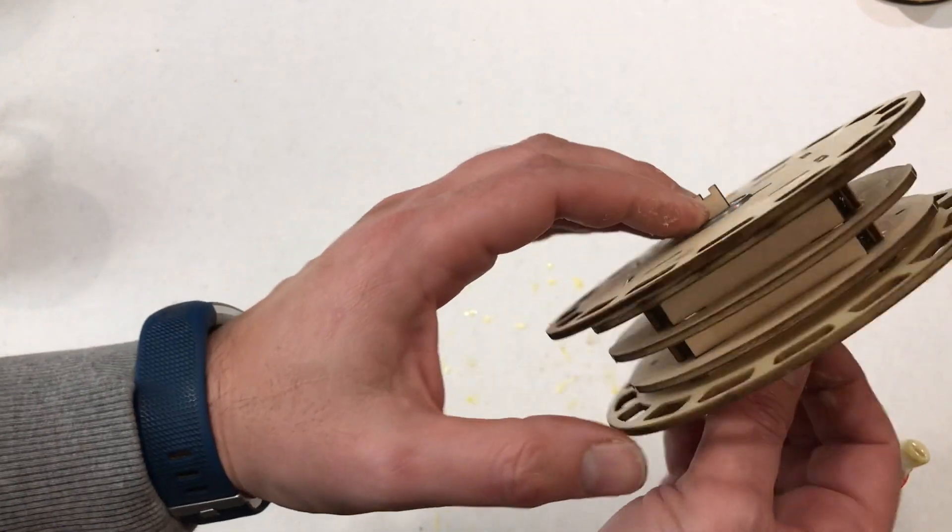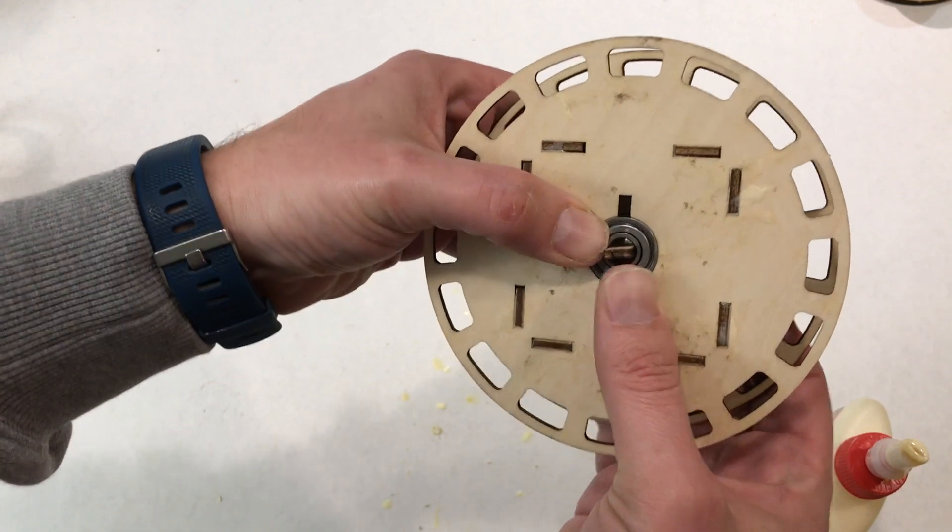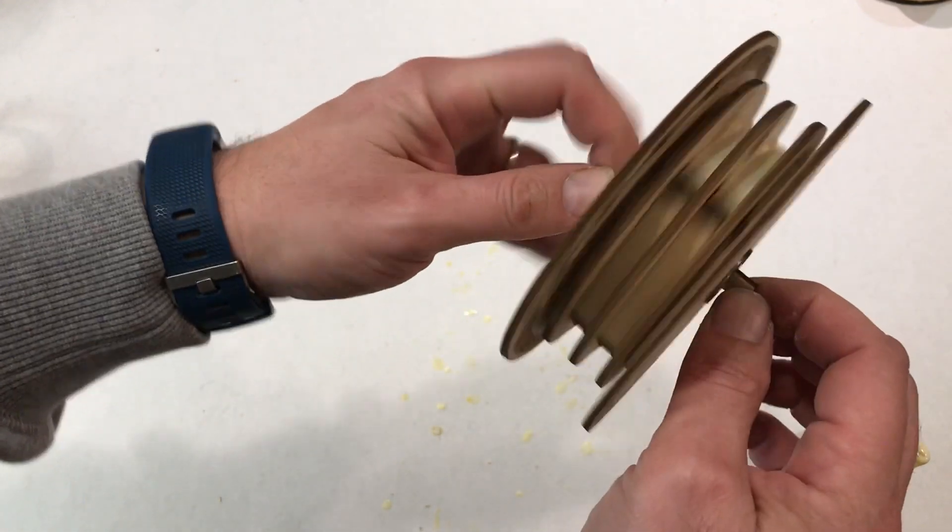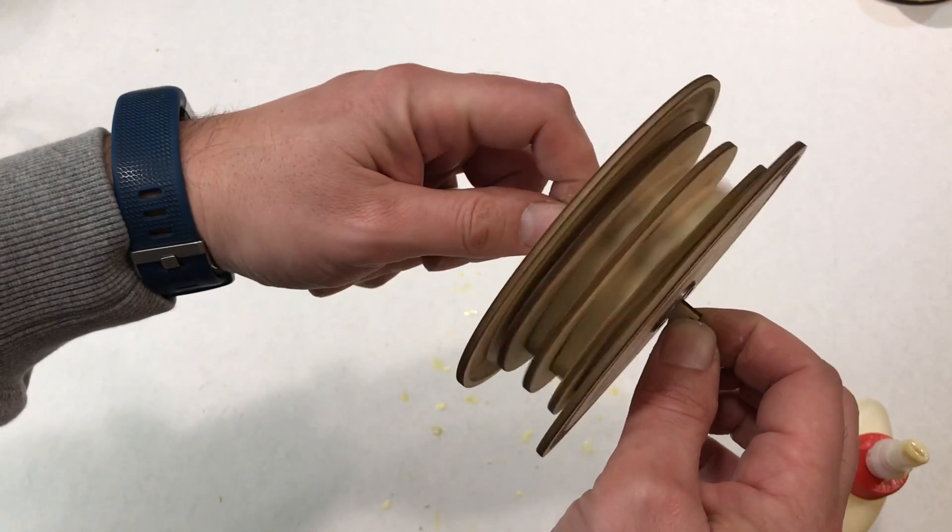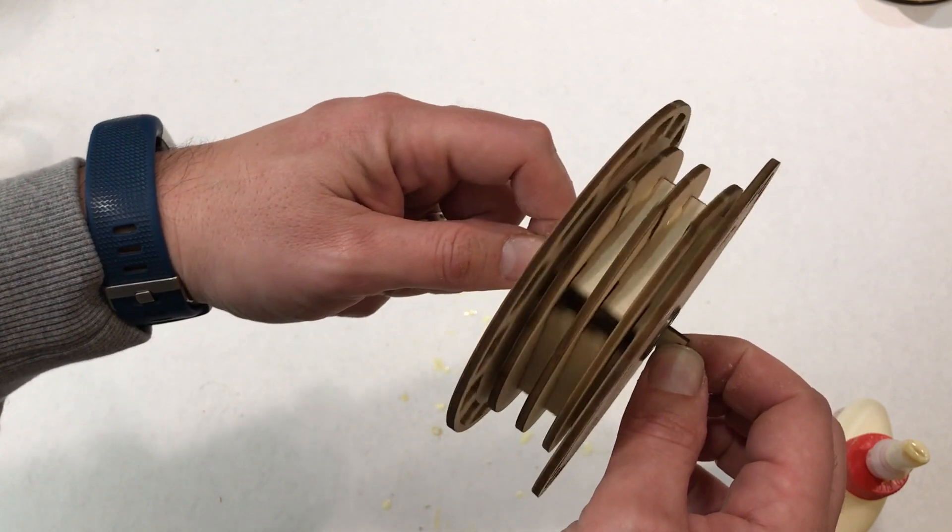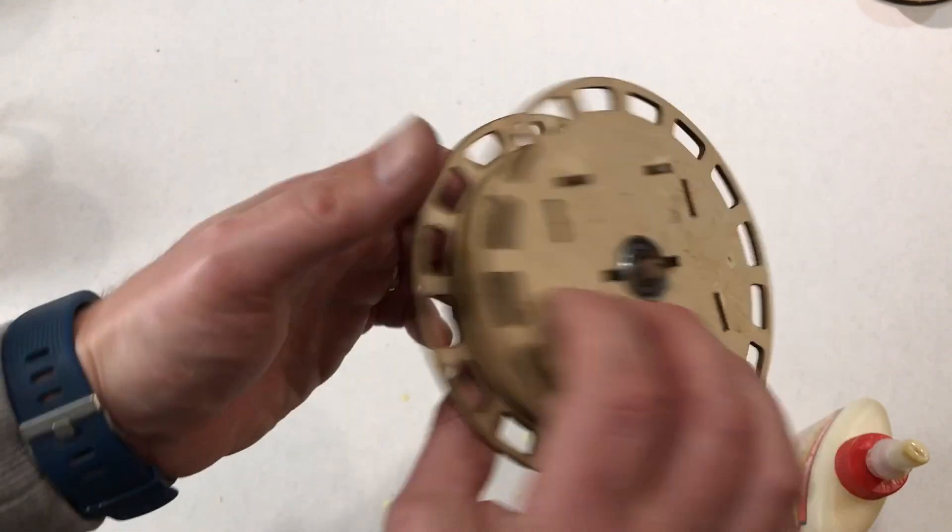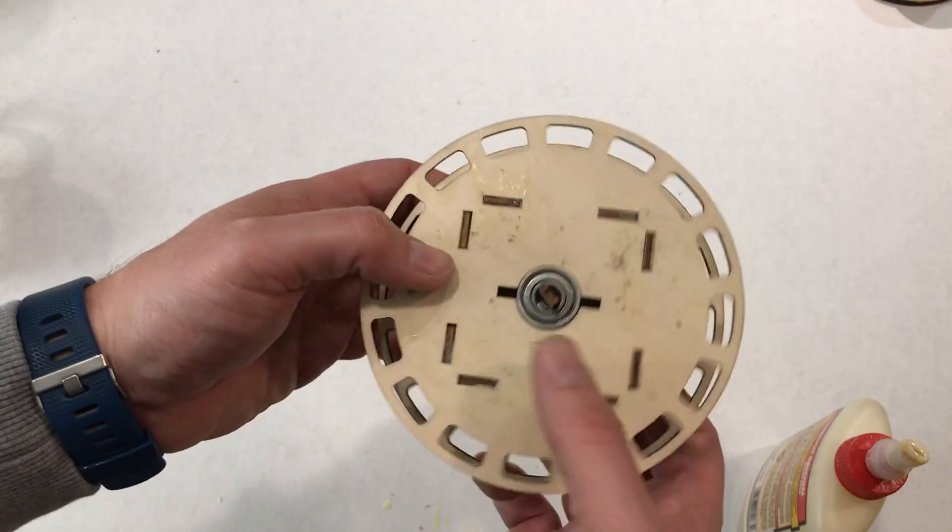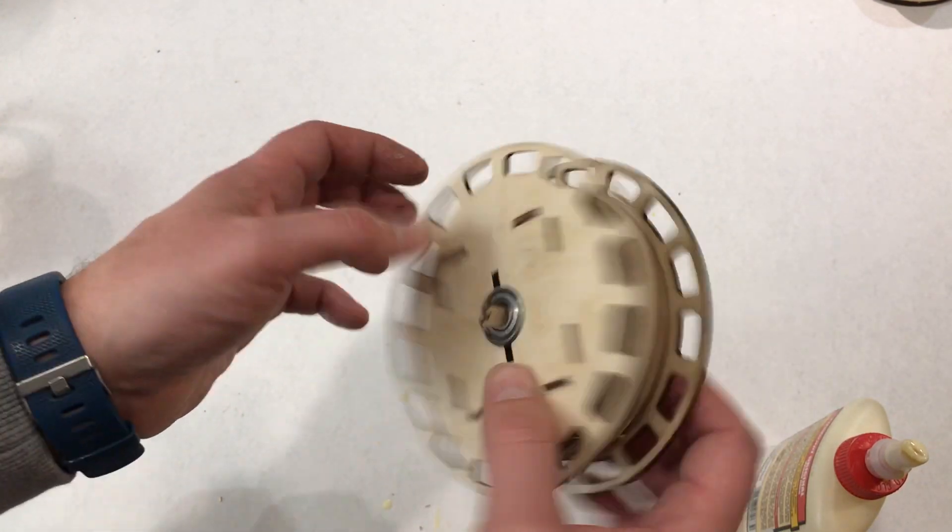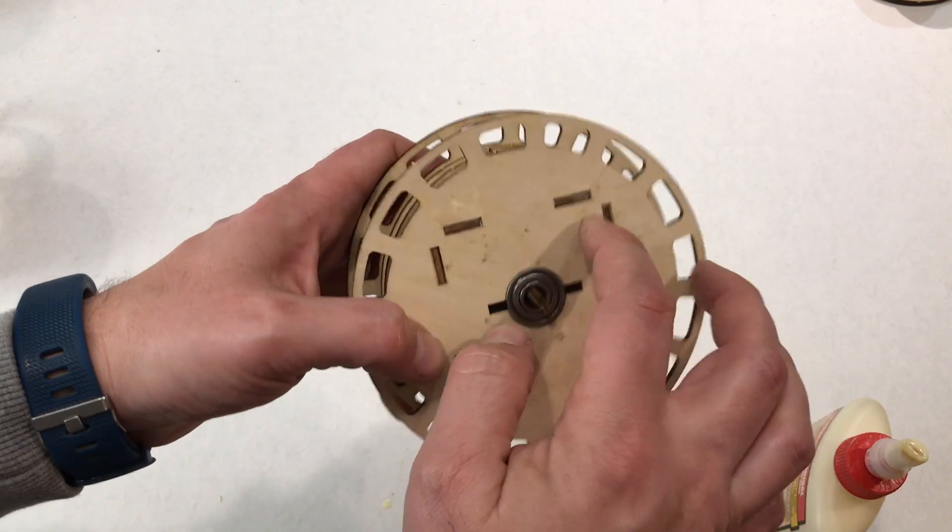You want to make sure that your bearings are close and everything is flush on either side. Make sure everything spins properly, make sure everything is flush here and here, and then just let it dry. You can come back later and sand off some of that glue that's dried up.